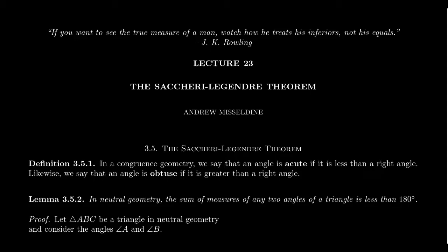Be aware that this definition doesn't require any notion of measure whatsoever — it can be done entirely within a congruence geometry. In congruence geometry, it can be proven that the supplement of an acute angle is obtuse, and vice versa. Likewise, the complement of an acute angle has to be acute, while an obtuse angle doesn't have a defined complement because it's bigger than a right angle. We've also shown that a triangle cannot have two right angles, or a right angle and an obtuse angle. A modification of this theorem shows that no triangle can have more than one obtuse angle.